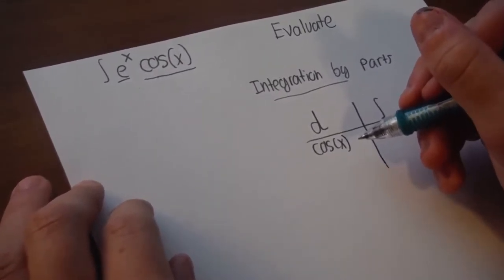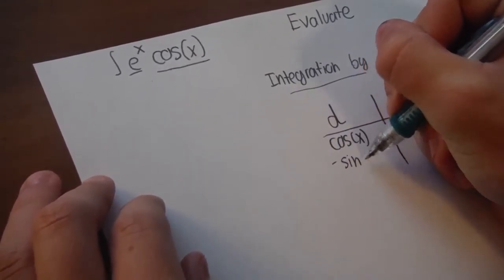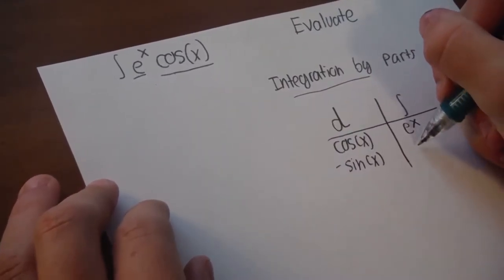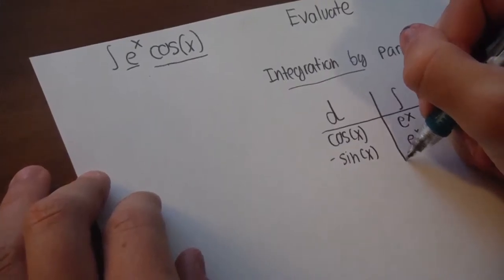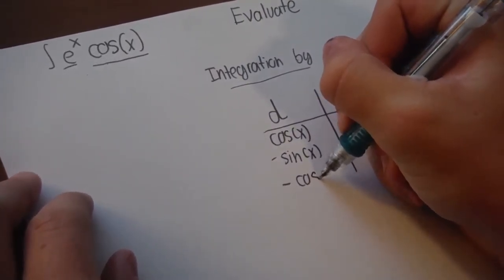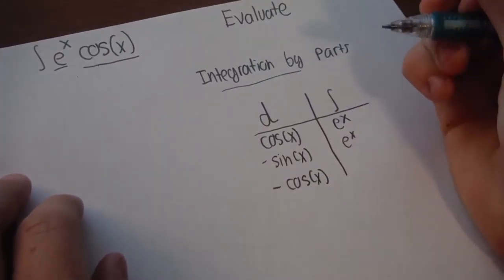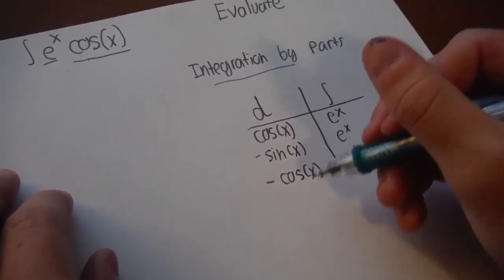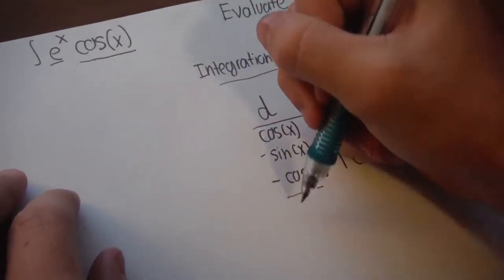So we derive it one time, it's negative sine. This is still e to the x, the integral of e to the x is e to the x, and if we do it one more time, it's negative cosine of x. So now we have the same thing here.